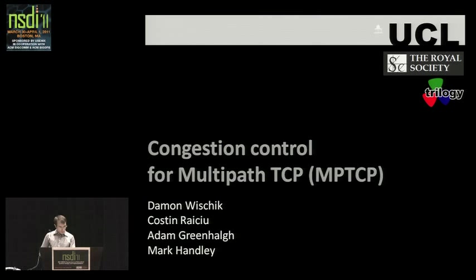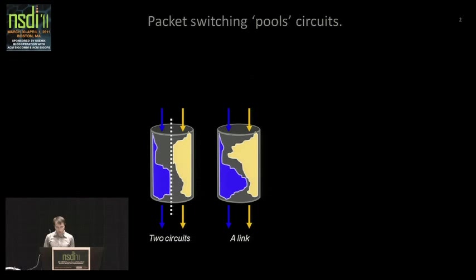To set up the high-level question we're trying to solve in this paper, I want to start off with some ancient history. I want to talk about circuit switching versus packet switching. In the beginning, there was circuit switching. With circuit switching, you have a dedicated channel, a dedicated circuit for each flow, and the flow is simply not allowed to stray outside its circuit. This is rigid and inflexible.